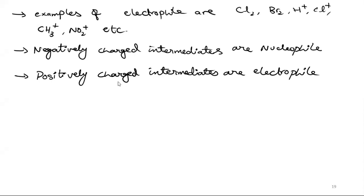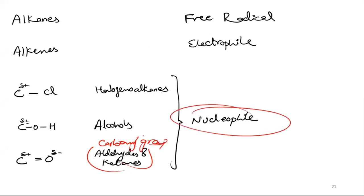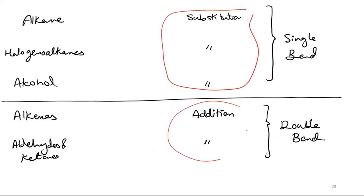Looking at the reaction type table: alkanes undergo free radical reactions, alkenes undergo electrophilic reactions, and halogenoalkanes, alcohols, aldehydes, and ketones (the carbonyl group) undergo nucleophilic reactions. Alkanes, halogenoalkanes, and alcohols all undergo substitution, while alkenes and aldehydes and ketones undergo addition.